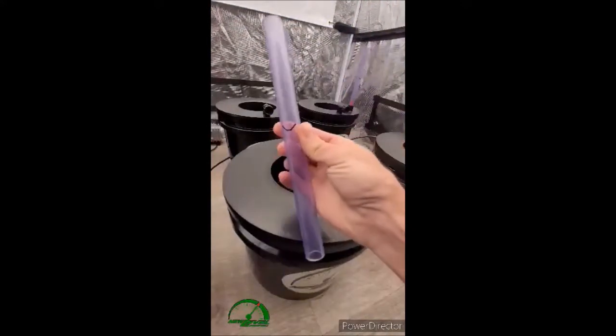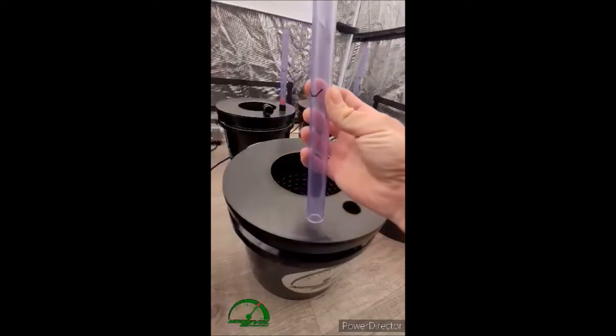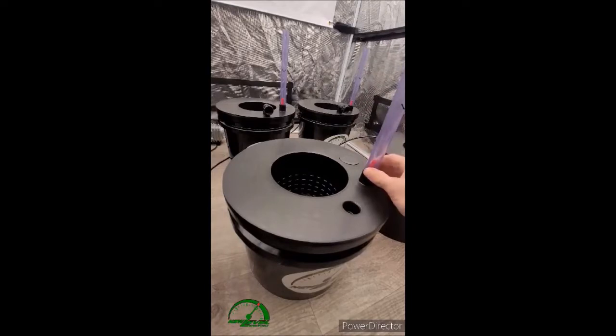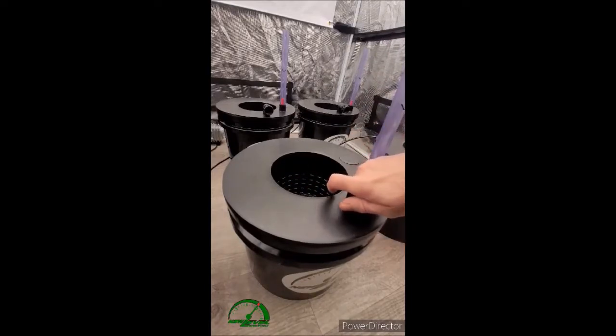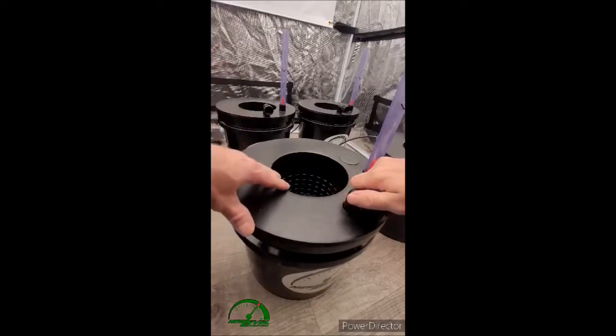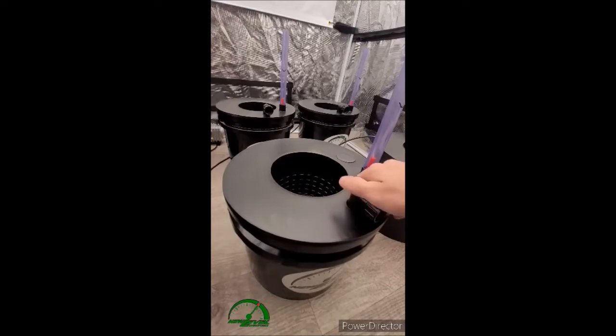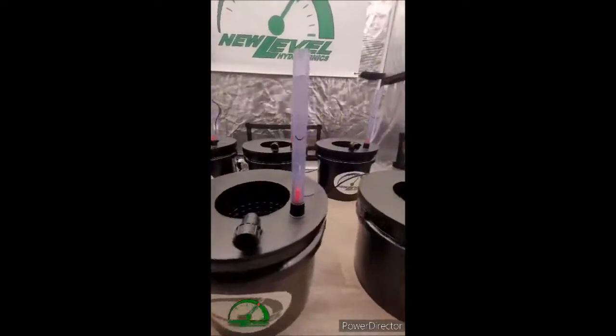One of the last steps, we have the water level indicator tube and that just goes on over top just like that. We have our 90 degree fitting, it also just press fits right into the top and can be turned in either direction you would like, or you can just turn the bucket.